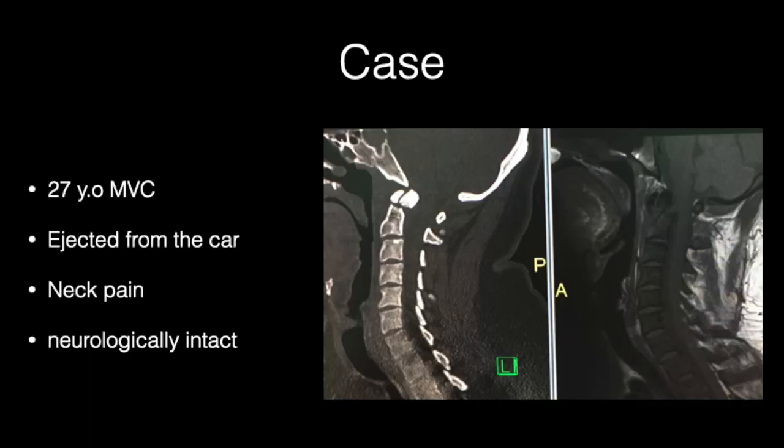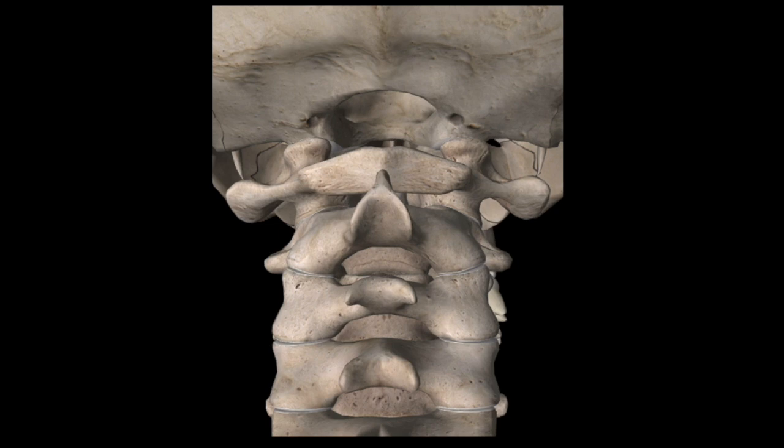We will now discuss surgical atlas anatomy through the following case. This patient is a 27-year-old male involved in a motor vehicle crash. He presented with neck pain but was neurologically intact. CT cervical spine showed a type 2 odontoid fracture, and MRI confirmed transverse atlantal ligament disruption, which is a clear indication for C1-C2 fixation.